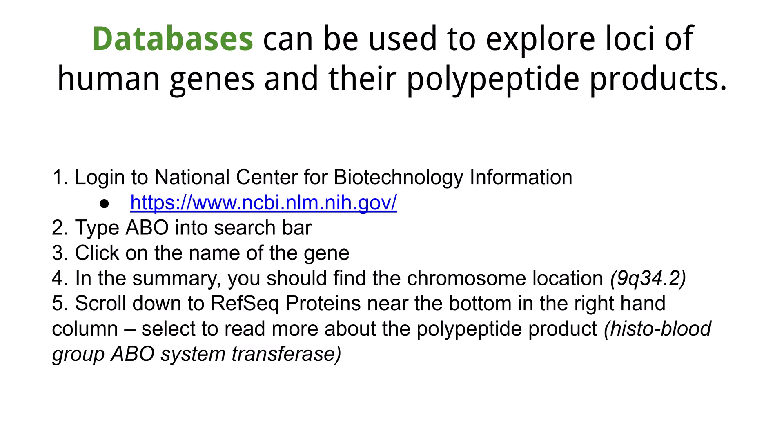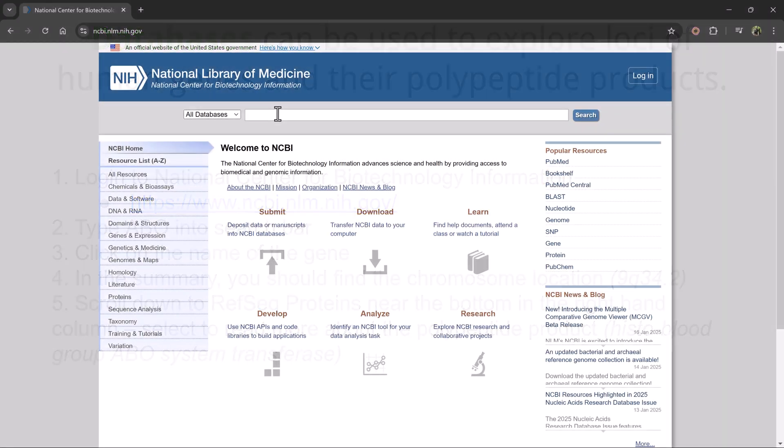You can use an online database to find the loci, or location, of human genes and the polypeptide products. Using the information on the slide, you can find information about the ABO blood types. Let's open up the online database for the National Center for Biotechnology Information, NCBI.